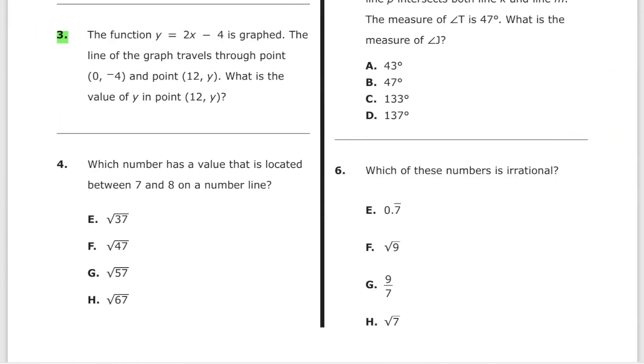Problem number 3. The function y equals 2x minus 4 is graphed. The line of the graph travels through point (0, -4) which is irrelevant and point (12, y). What's the value of y in (12, y)? So what happens is this is our x. So let's just plug in x. y equals 2 times 12 minus 4 which equals 24 minus 4 and the answer is 20.